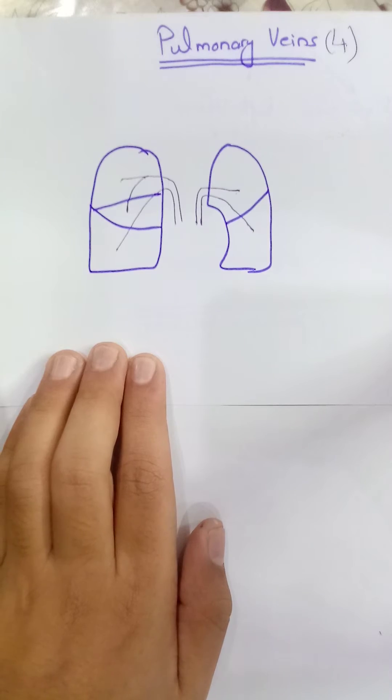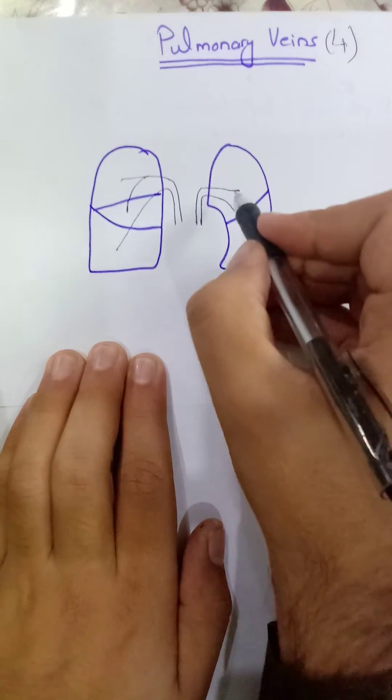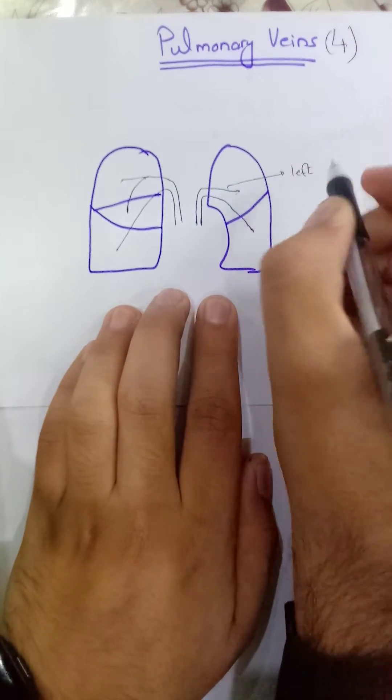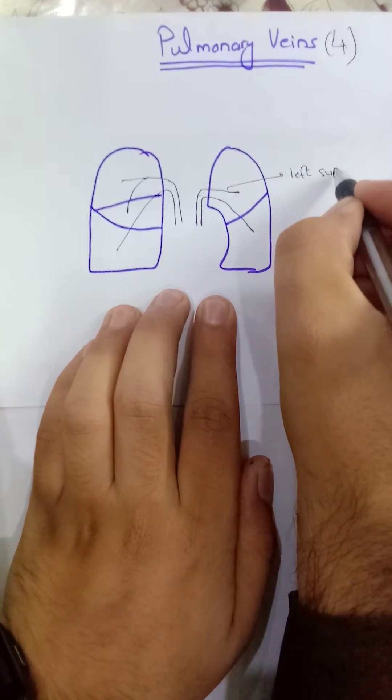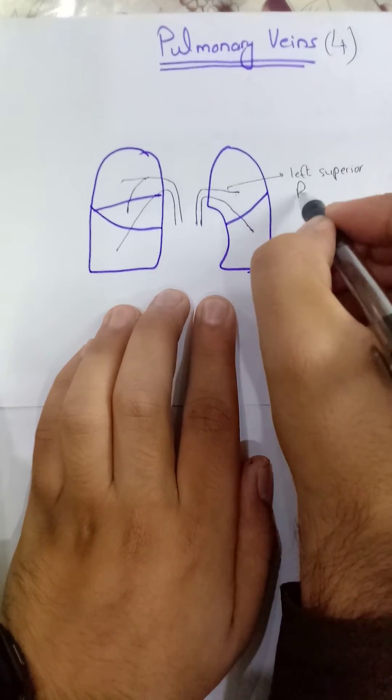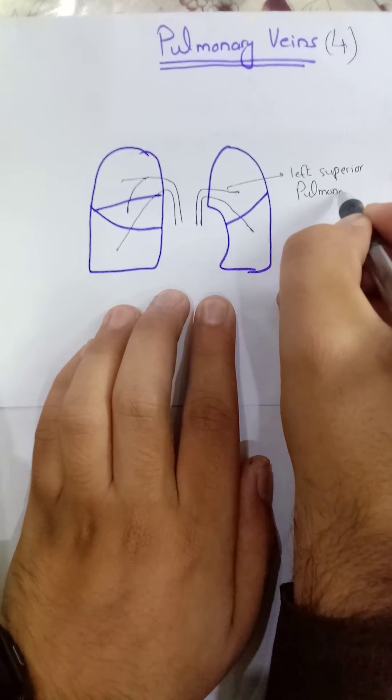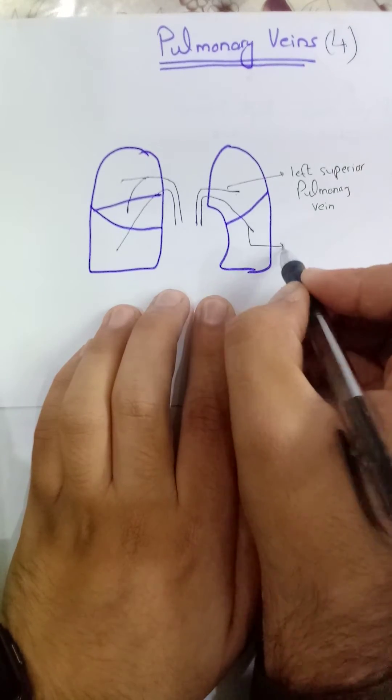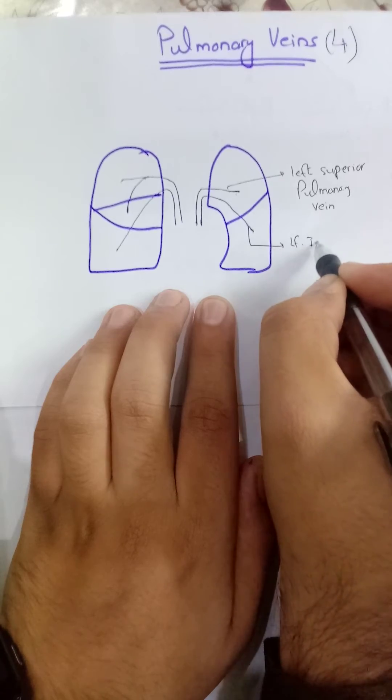Now we will label these vessels. This will be left superior pulmonary vein and this will be left inferior pulmonary vein.